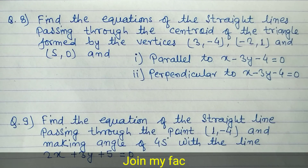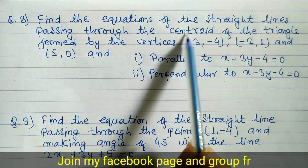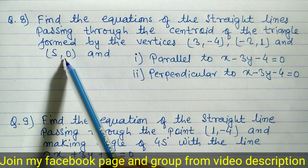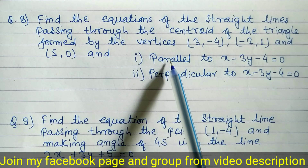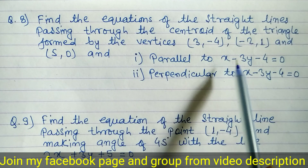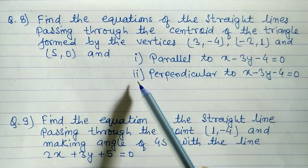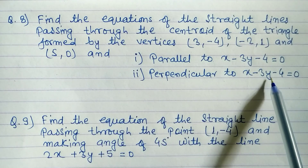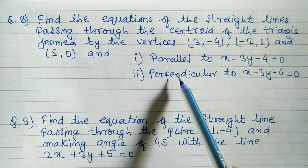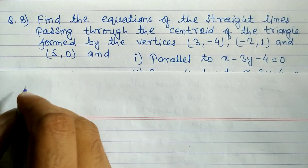Question number eight: find the equation of a straight line passing through the centroid of a triangle where three vertices are given. Before finding the equation of the line, we have to find the centroid of the triangle. Then in part one we find the equation parallel to a given line, and in part two we find the equation perpendicular to the same line.